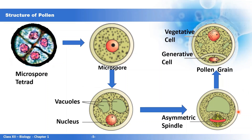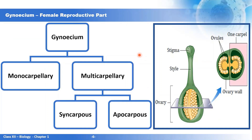Now we come to the female reproductive organ — the gynoecium — which is made up of pistils. If the gynoecium is made up of one pistil it is monocarpellary, for example mango. If it is made up of more than one pistil it is multicarpellary, for example lotus. In a multicarpellary ovary, the pistils could be fused — referred to as syncarpous — or the pistils could be free — referred to as apocarpous.